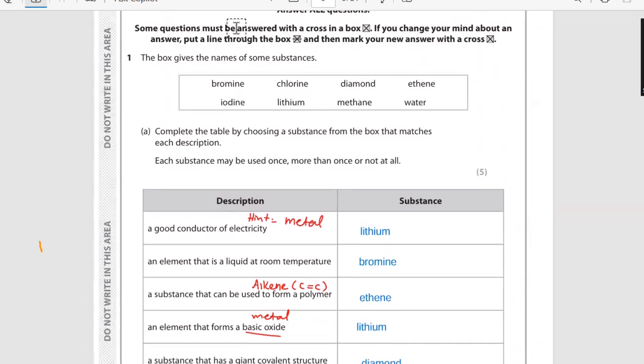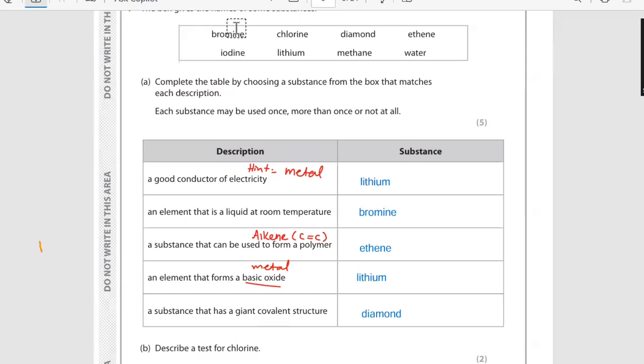Question number one says the box gives the names of some substances. Complete the table by choosing a substance from the box that matches each description. Each substance may be used once, more than once, or not at all. First one: a good conductor of electricity - of course it's a metal, so you can choose lithium from the box. Element which is liquid at room temperature - that's bromine. A substance that can be used to make polymer - that's ethene. It could be any alkene with a carbon-carbon double bond. The famous one is ethene which makes polyethene. An element that forms basic oxide - basic oxides are made by metals and acidic oxides are made by non-metals, so it's lithium. A substance that has a giant covalent structure - as you have learned, three giant covalent structures: diamond, graphite, and silica or silicon dioxide. So the answer is diamond.